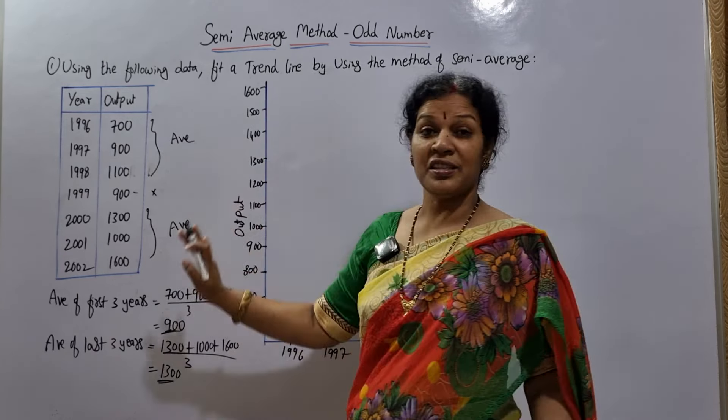For the average of the first three years: 700 plus 900 plus 1100, divided by three, gives 900. For the last three years: 1300 plus 1600 plus 1300, divided by three, gives 1300. Remember these two values — 900 and 1300 — as the average of the first three years and the average of the last three years. These are the key figures we need.